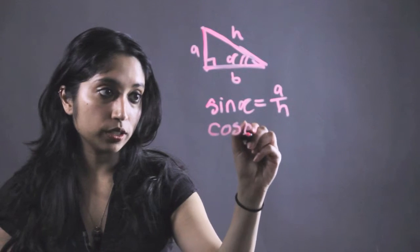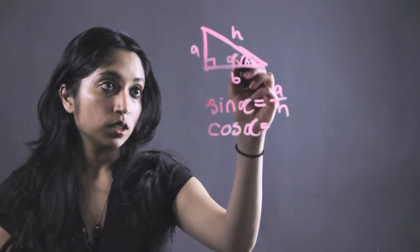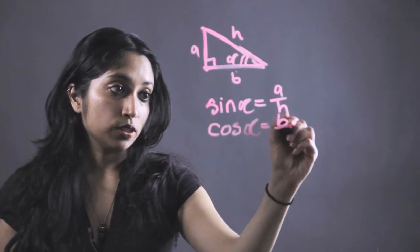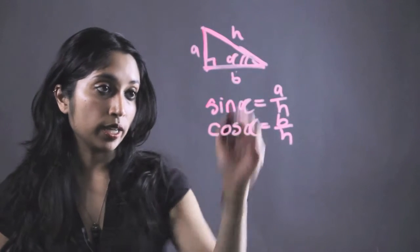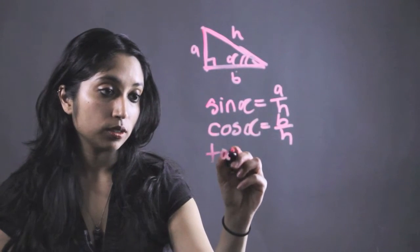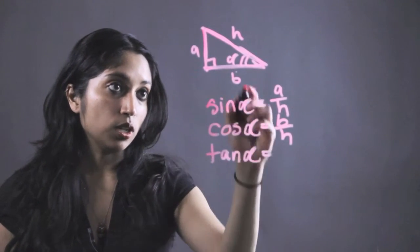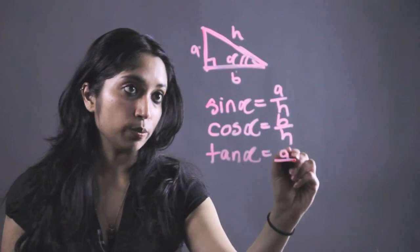Any of the trig functions will work for this. So cosine alpha, B over H, adjacent over hypotenuse. This near side over the hypotenuse. Tangent is going to equal opposite over adjacent. So it's going to be A over B.